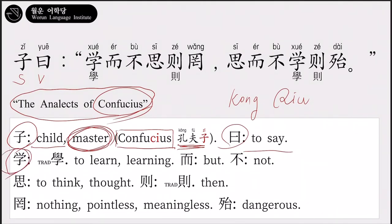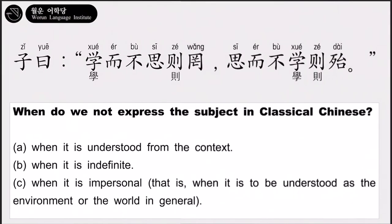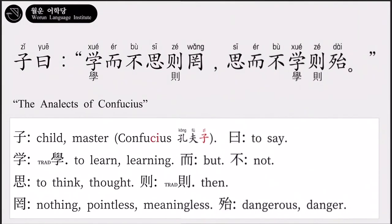Next, 学 means 'to learn' or 'learning.' But just learn — who learns? There's no subject. So when do we not express the subject in classical Chinese? A — when it is understood from context; B — when it is indefinite; C — when it is impersonal, that is, when it is to be understood as the environment or the world in general. This sentence is case B: indefinite subject. One learns — anyone, anybody who learns.